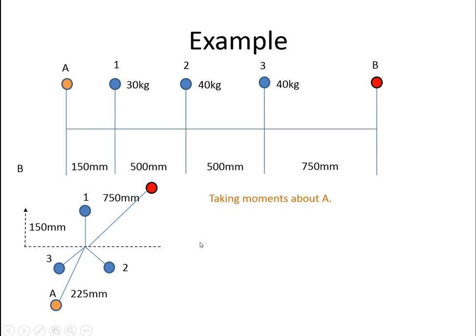So we'll start by taking the moments about A. When I say the moments, we're going to look at the horizontal component of those moments. So the horizontal components would be M1R1D1, mass of 1, the radius of 1, by the distance of 1 from A. Similarly for 2, 3, and the balance mass B.